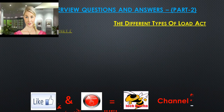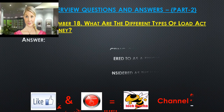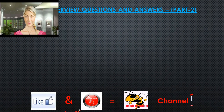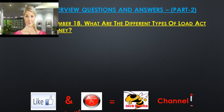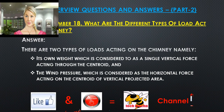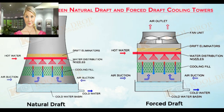Question 18: What are the different types of loads acting on a chimney? There are two types of loads acting on the chimney: its own weight, which is considered as a single vertical force acting through the centroid, and wind pressure, which is considered as a horizontal force acting on the centroid of the vertical projected area of the chimney.